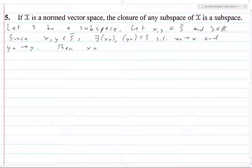Then x_n plus lambda y_n goes to x plus lambda y. And this is since plus and scalar multiplication are continuous, and so limits behave nicely.